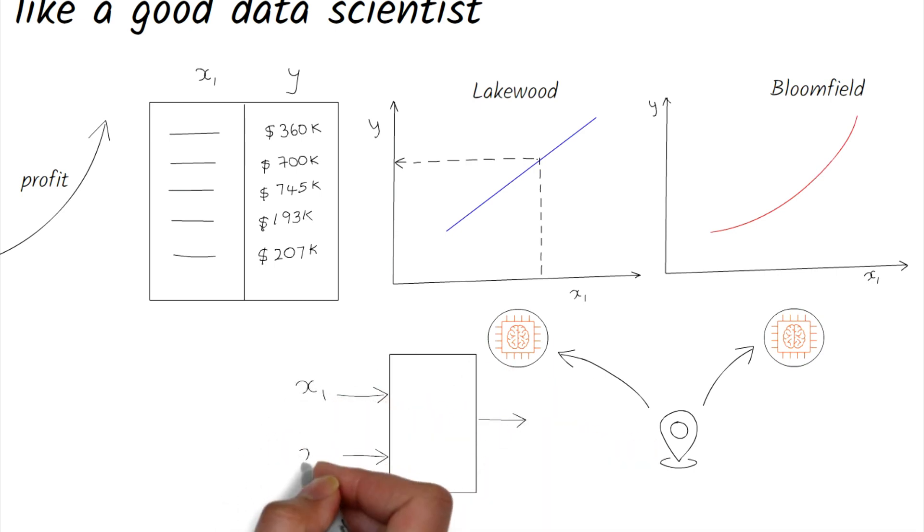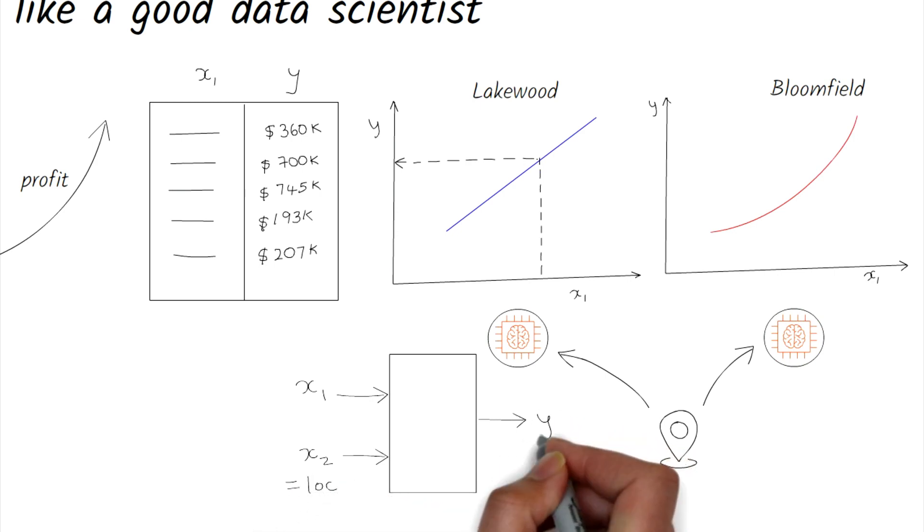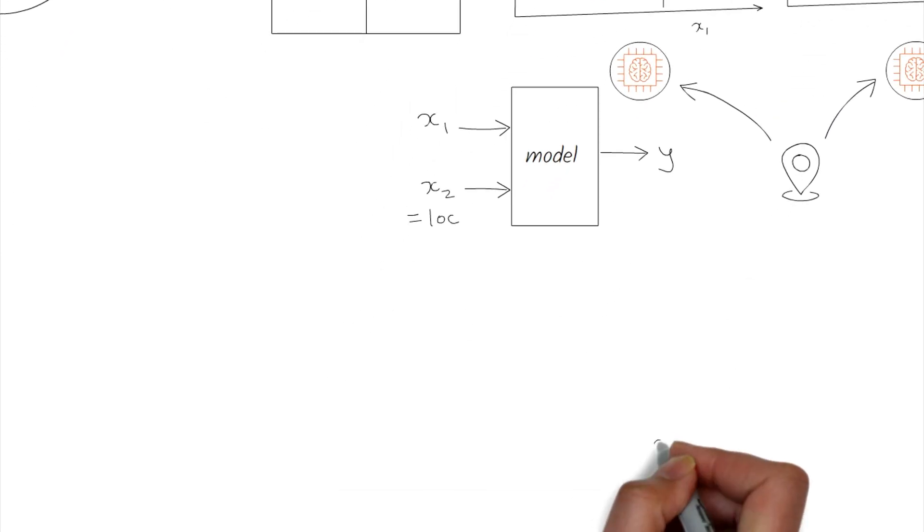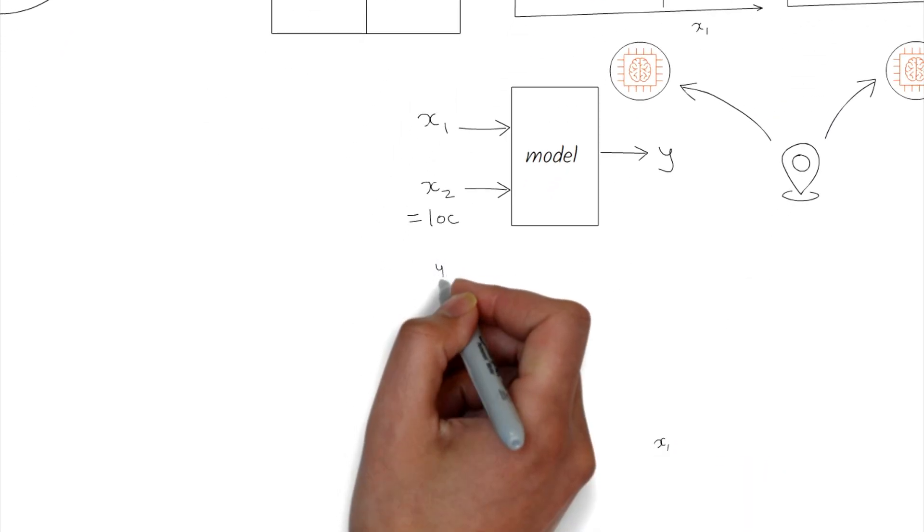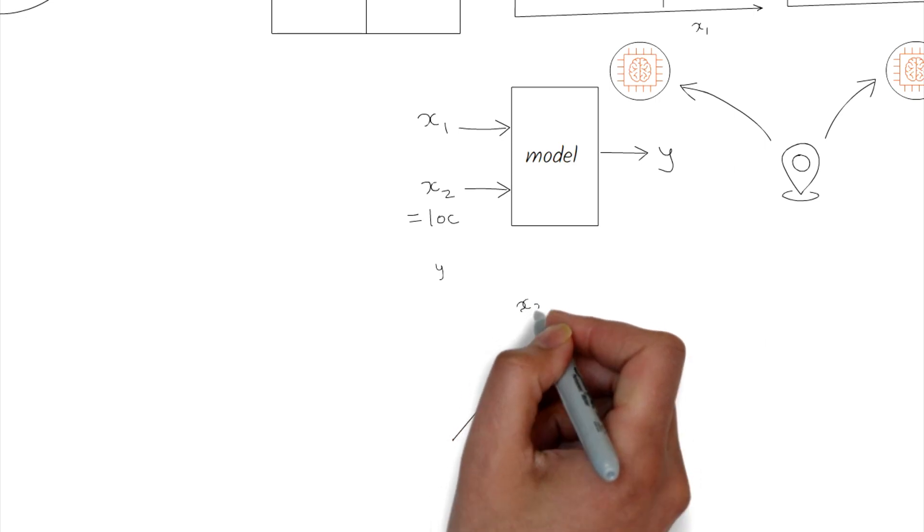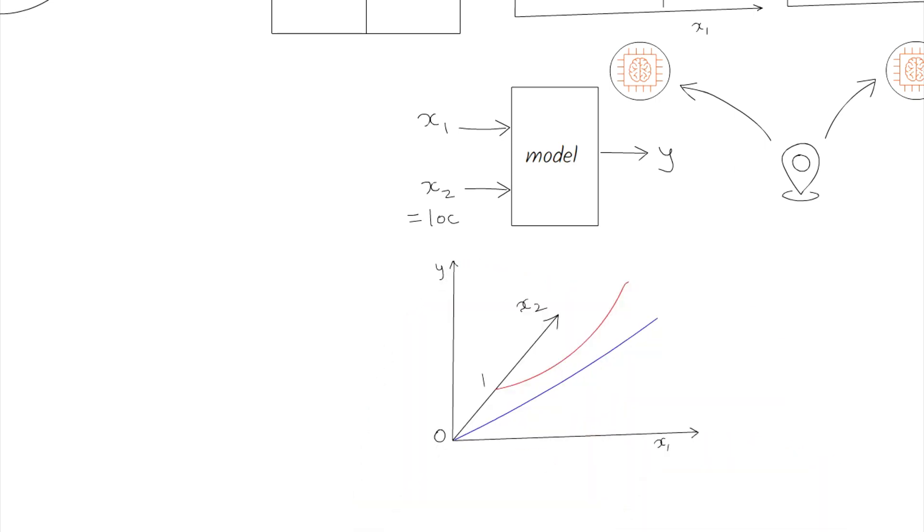But you might also decide to combine the two models into one and use location as an additional input. Maybe the number zero represents Lakewood and the number one represents Bloomfield. This is what the graph will look like. In this case, the price prediction graph is depicted in three dimensions where x1 is square footage, x2 is location, and y1 is price.